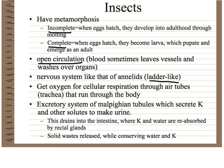Insects also have a ladder-like nervous system. They have structures called trachea — a series of tubes that run through the body. At the end of each trachea is something called a spiracle, which are openings on the side of the body. Air moves through the body that way, so they don't have lungs. Every time they beat their wings, they move air through their body. Their excretory system consists of Malpighian tubes, which secrete potassium to make urine, then reabsorb that potassium, causing water reabsorption and allowing them to release solid waste — helping them conserve water.